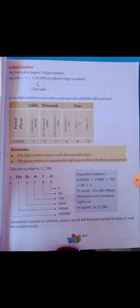Five is in the thousands place, so we write it as five thousand — a 4-digit number. One is in the ten thousands place, which is a 5-digit number, so we write it as ten thousand. Six is in the lakhs place — lakh is a 6-digit number — so we write it as six lakh.